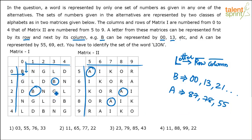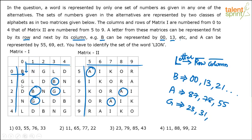Let's say we want G. G is at the 2nd row and 3rd column, so 23. G is also at the 3rd row and 1st column, so 31. Each letter will appear 4 or 5 times in the matrices, giving 4 or 5 ways of numbering it. G here is at the 4th row and 4th column, so 44. G here is at the 1st row and 0th column, so 10, and so on. That's the logic.